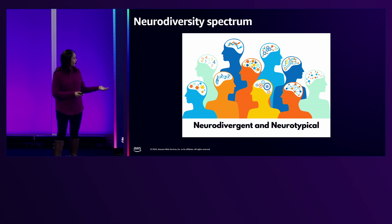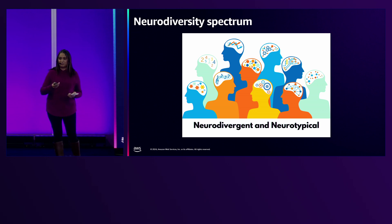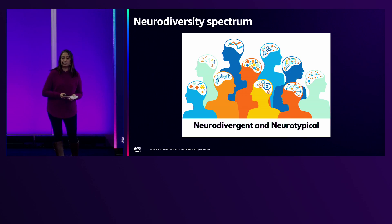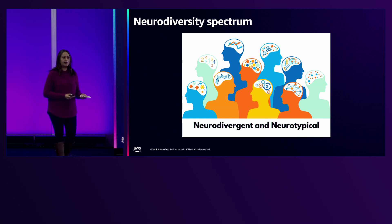I can never resist sharing some names when I talk about neurodivergence. You may have heard of Greta Thunberg, Albert Einstein, Justin Timberlake, Emma Thompson, and my personal favorite — not the person, but the fact that Richard Branson calls out dyslexia as his super skill on his LinkedIn profile. That's truly what neurodivergence brings. It is a super skill if you get the right environment and conditions to thrive. And of course, 80% of the world makes up the neuromajority or are neurotypical.